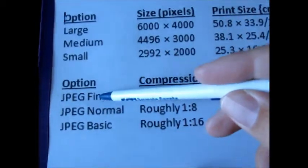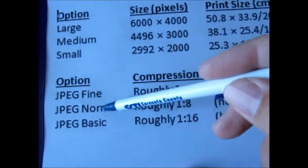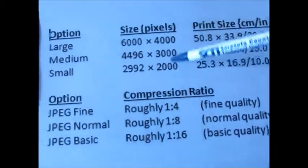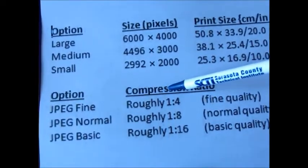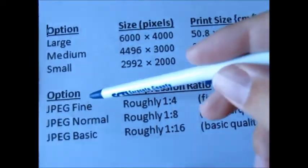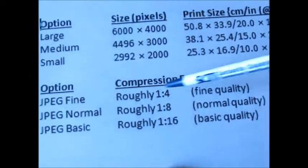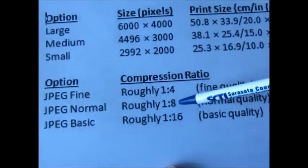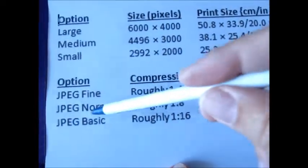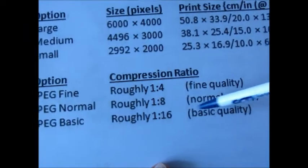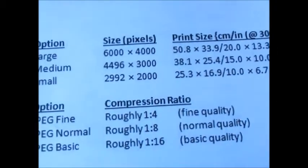The other word, so we have large fine. The next option deals with compression. The first word dealt with size, the second one deals with the compression ratio of the image. Fine is compressed at a rate of 1 to 4, that's fine quality. A normal image is compressed at a rate of 8 to 1 or 1 to 8, that's normal. And then basic is 1 to 16, which is quite a bit of data compression.